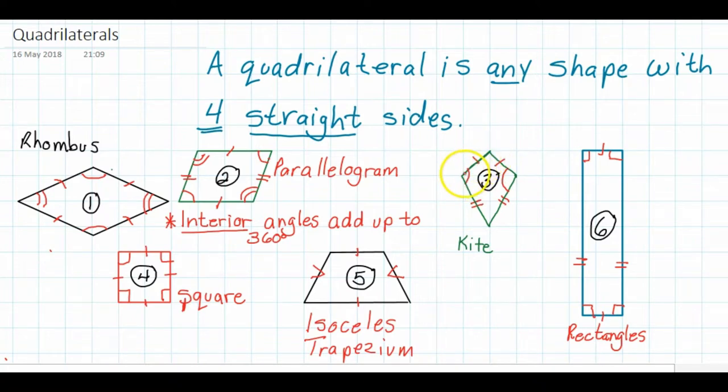The other thing that you need to keep in mind with a kite is that the adjacent sides, that's these sides here and these sides here are equal. So for example, this side here is going to be equal to this side and this side here is going to be equal to this side. So that's a kite.